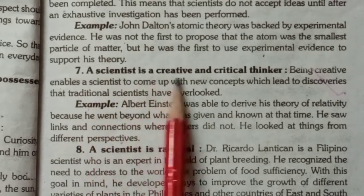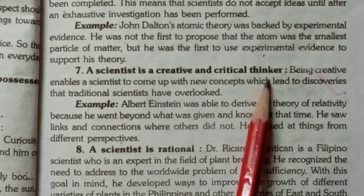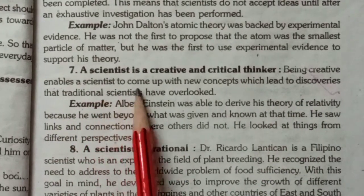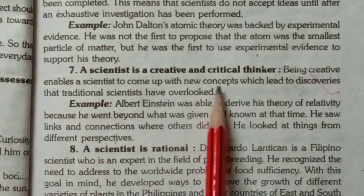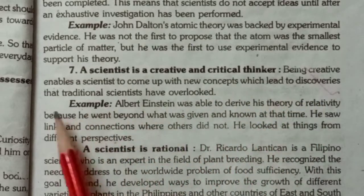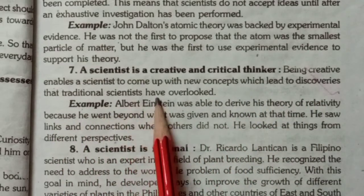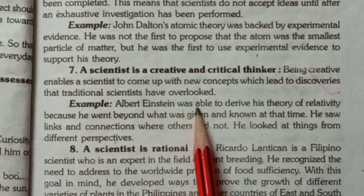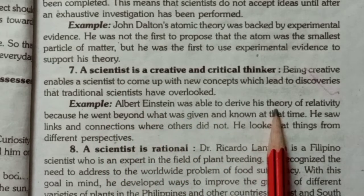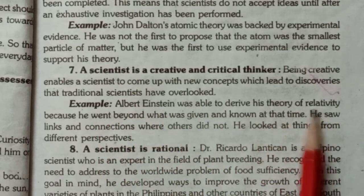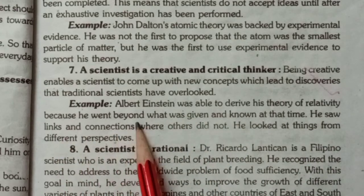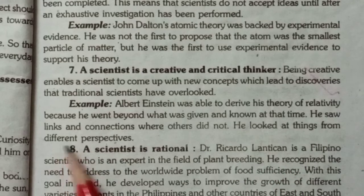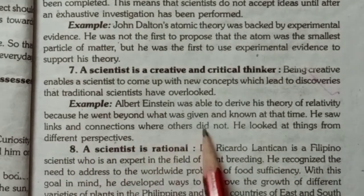Seventh, a scientist is a creative and critical thinker. Being creative enables a scientist to come up with new concepts which lead to discoveries that traditional scientists have overlooked. For example, Albert Einstein was able to derive his theory of relativity because he went beyond what was known at the time and saw links and connections where others did not.